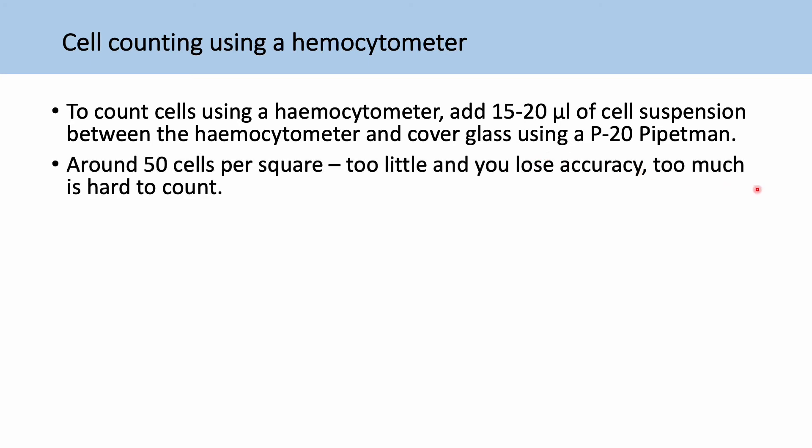You want around 50 cells per corner. Because if you have too few cells, you're not getting an accurate count. Maybe your cell mixture isn't mixed correctly. And if you have too many cells, it's going to be harder for you to count. It'll take ages and there may be clumping and hard to differentiate cell per cell.